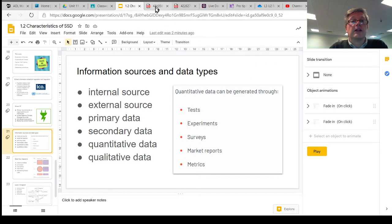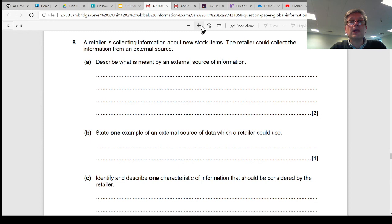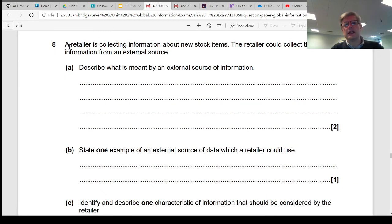Let's have a look at the kind of thing you might see on an exam question. You can see here: a retailer is collecting information about new stock items. The retailer could collect the information from an external source. Describe what is meant by an external source of information. And part B, state one example of an external source of data which a retailer could use. So the context is a retailer - this is someone who sells things to make a profit. Thinking about putting new items into stock and now wants to find out whether they'll sell and things like that, what people think about them. And what they're asking here is, what's meant by an external source and what might that look like?